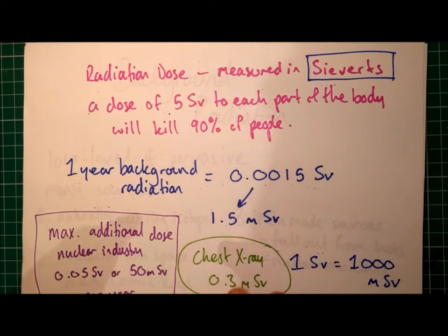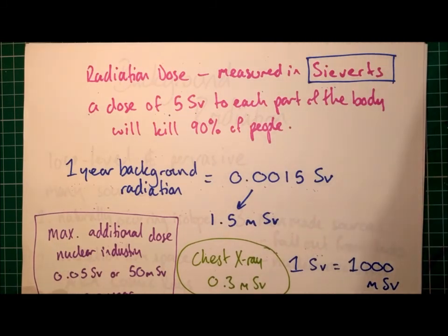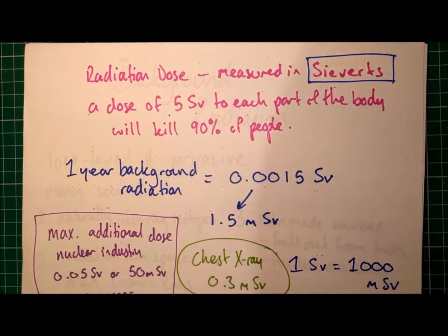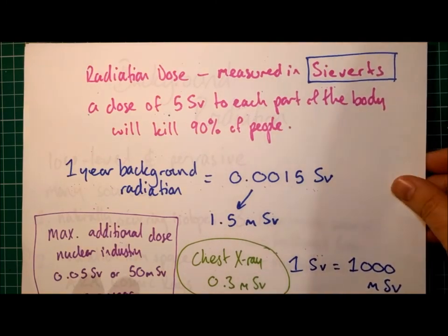A couple of other notes to give you a bit of scale. The maximum additional dose allowed in the nuclear industry is 50 millisieverts every year. And having a chest x-ray only gives you an additional dose of 0.3 millisieverts — roughly a fifth of your annual background radiation.